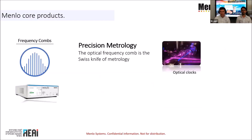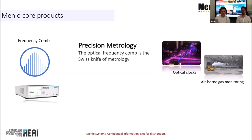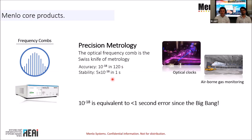Similar laser technology is also used for our core component, the frequency comb. A frequency comb can be explained on a high level as a ruler to measure laser frequencies up to a very precise digit, not available by simple electronic means. Specific applications include optical clocks and airborne gas monitoring. We can achieve accuracy up to the 18th decimal digit in just 120 seconds, with stability of 5×10⁻¹⁸ in one second — equivalent to an error of less than one second since the Big Bang.